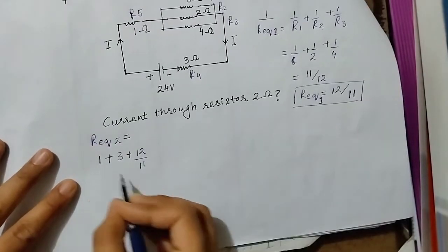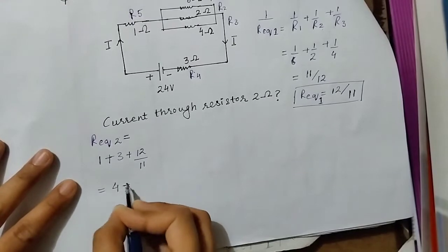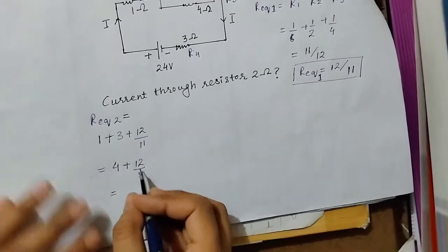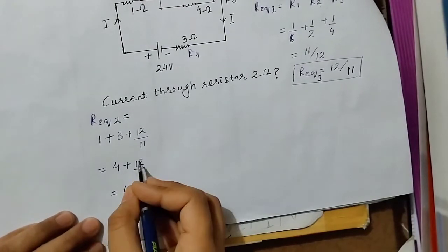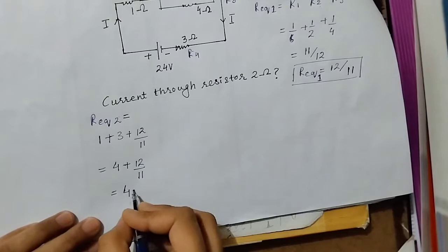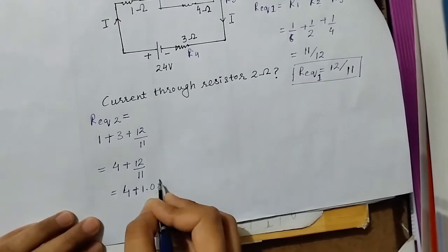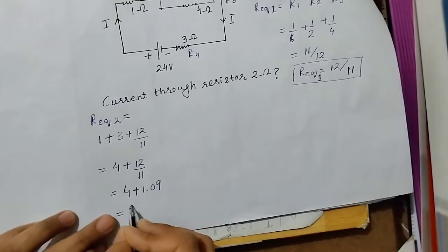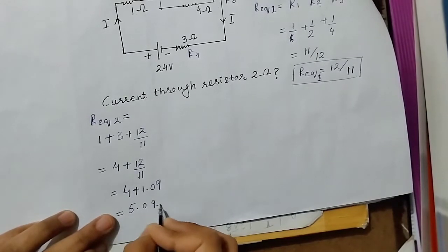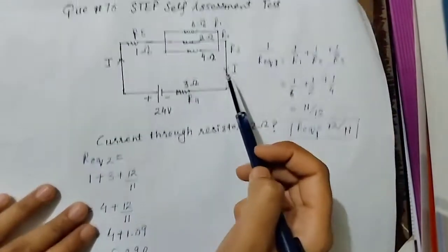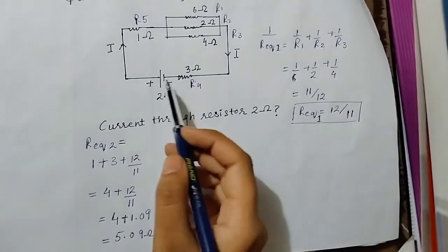Now if we round off and understand that 12 and 11 are almost the same, 4 plus 1.09 equals 5.09, which is the equivalent resistance of the whole circuit.